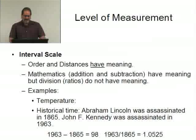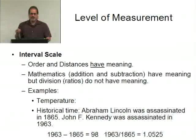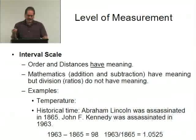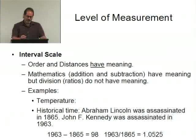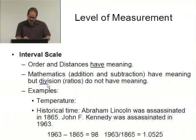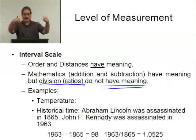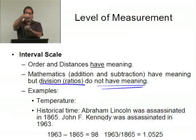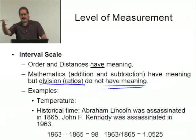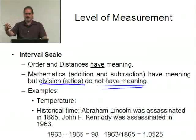The interval scale is where order and distances have meaning. This is the first measurement scale where mathematics such as addition and subtraction have meaning. However, in an interval scale variable, division — the ratio of two values — does not have meaning. If I take two values and subtract them, that distance makes sense. But if I take those same two values and divide one by the other, I will get a number, but that number lacks meaning.